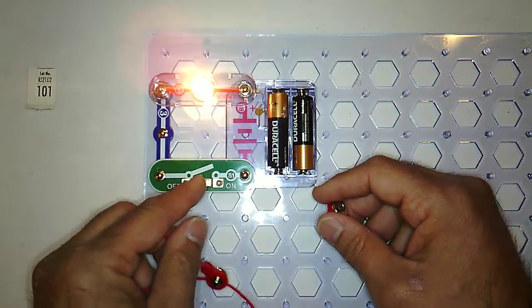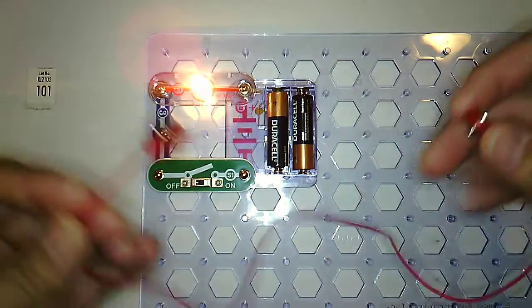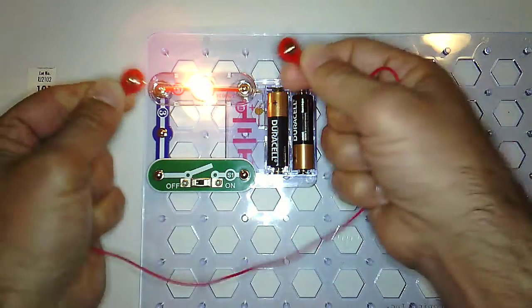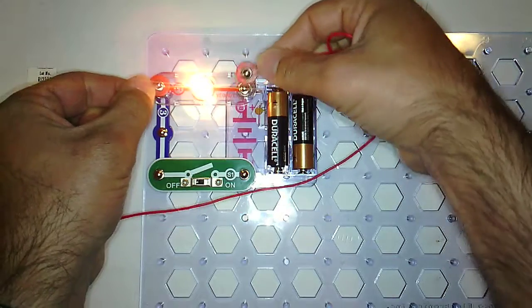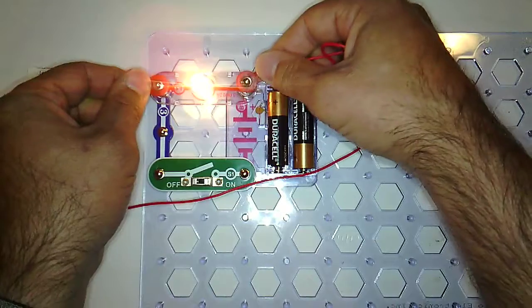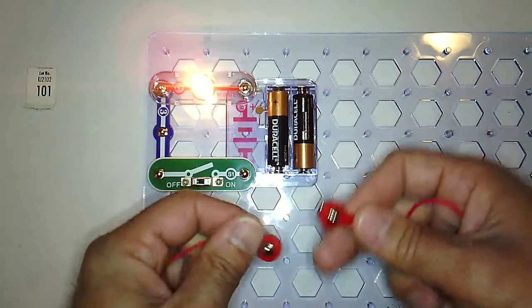So turn your circuit on. You've got a lit light bulb and when I say create a short circuit, what I mean is you're going to take the snaps and you're going to connect them very briefly across different places in the circuit. Please don't leave it connected because that will start to heat up the battery.